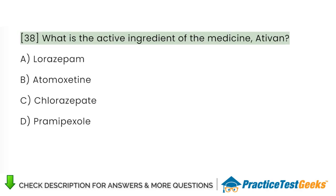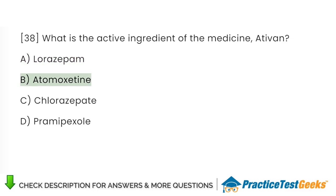What is the active ingredient of the medicine Ativan? A. Lorazepam. B. Atomoxetine. C. Chlorazepate. D. Pramipexole.